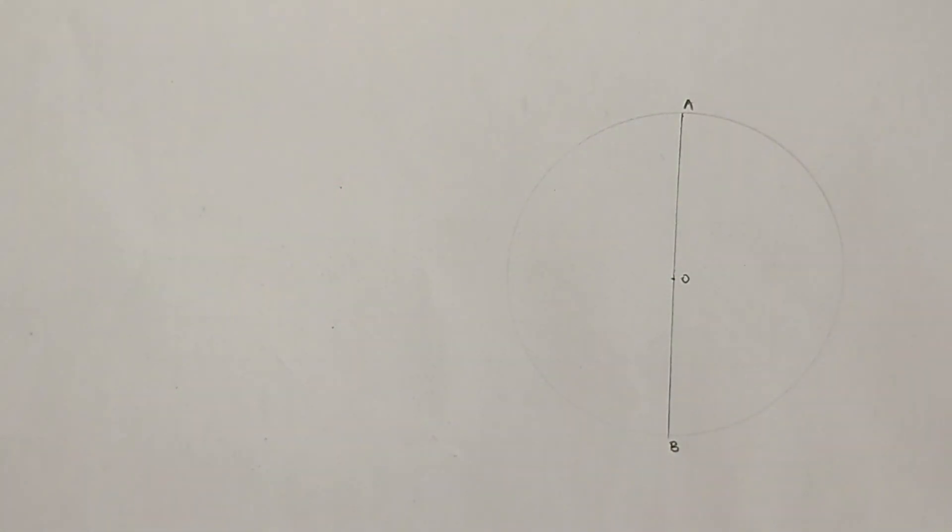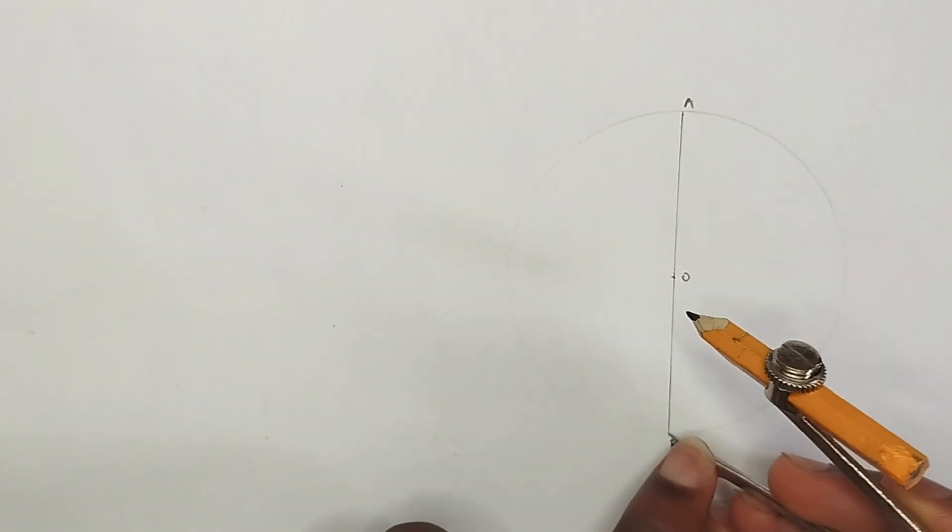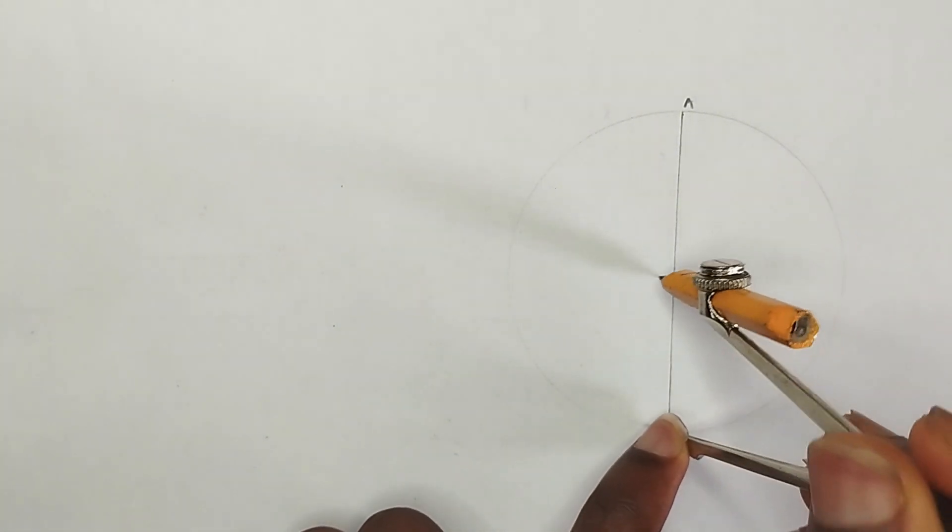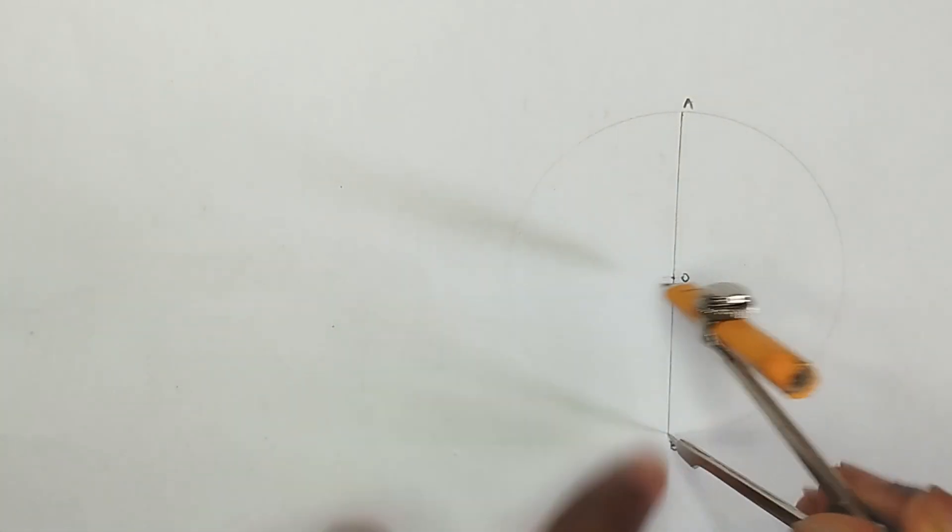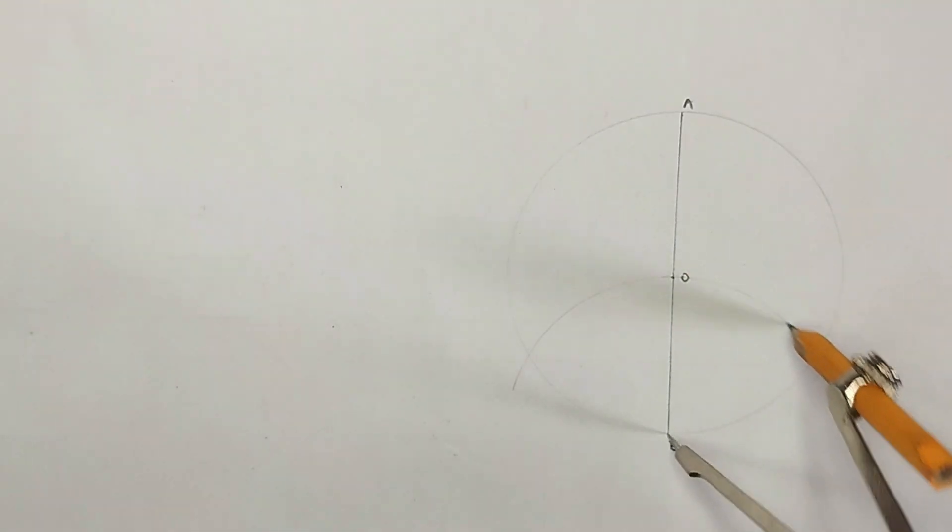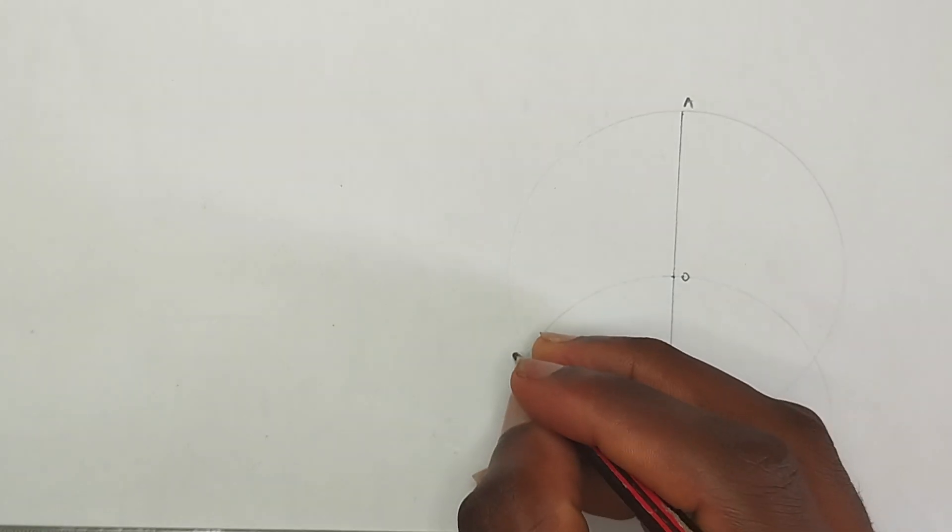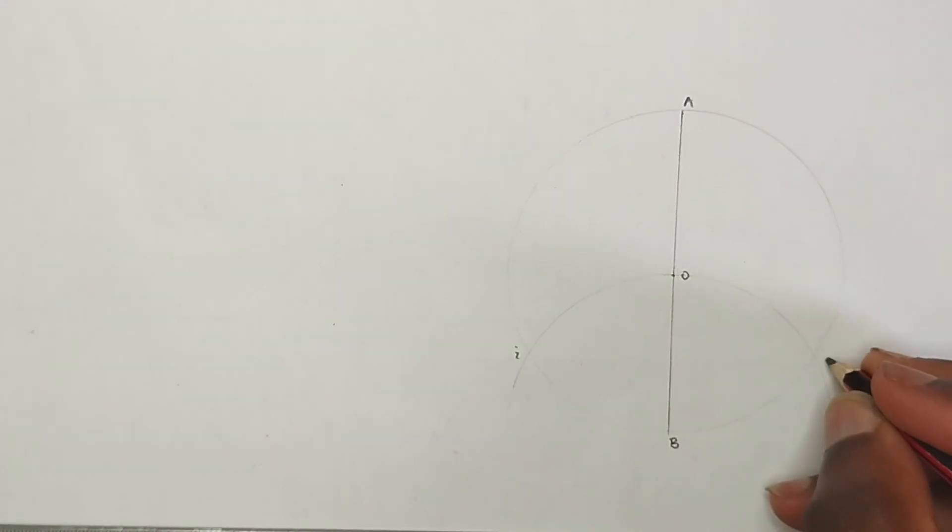From point B, making use of the radius of the circle which is ABO, I'm going to strike an arc in a semicircle manner. I'm going to be labeling this point as point I, then I'm going to label here as my point J.